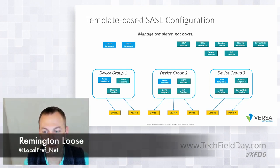You mentioned at the top of this section that you support IPv4 and IPv6. Is that supported both in the underlay and the overlay, so you could handle IPv6 transport in the underlay — the physical connectivity from the internet or an MPLS connection?